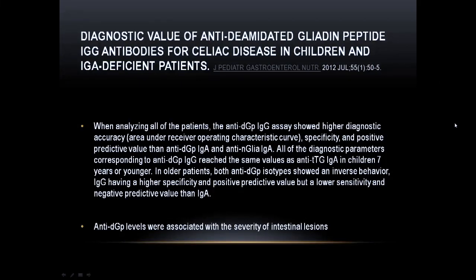The antibody test against deaminated gliadin peptides has been documented very well. Sometimes different people — particularly younger versus older — will have more of the IgA isotype present and less of the IgG, and vice versa. So both should be present in the evaluation.